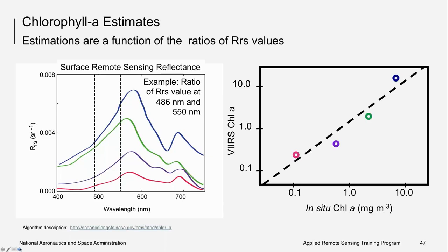There is more than one chlorophyll algorithm depending on the environment being studied — for example, an algorithm for the open ocean may not be appropriate for the coastal ocean. Which satellite sensor is being used can also define which algorithm should be used. Simply stated, the ratio of two remote sensing reflectance measures are used as inputs into the chlorophyll algorithm and the result is an estimate for chlorophyll concentration. Validation is performed by collecting sea-truth measurements of chlorophyll within one hour on either side of the satellite overpass, then comparing those in-situ measurements to the satellite-derived chlorophyll.